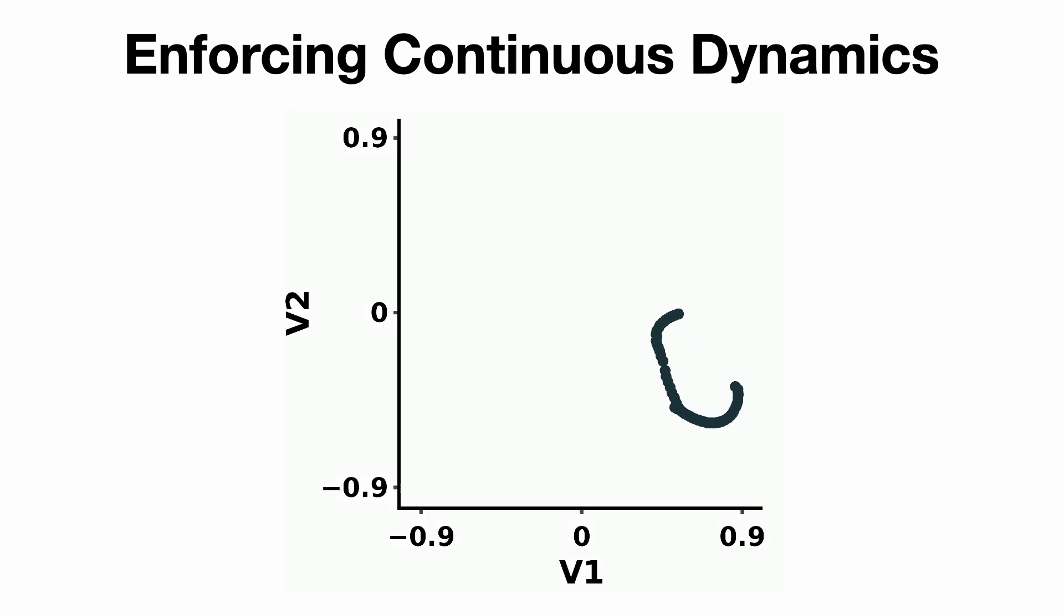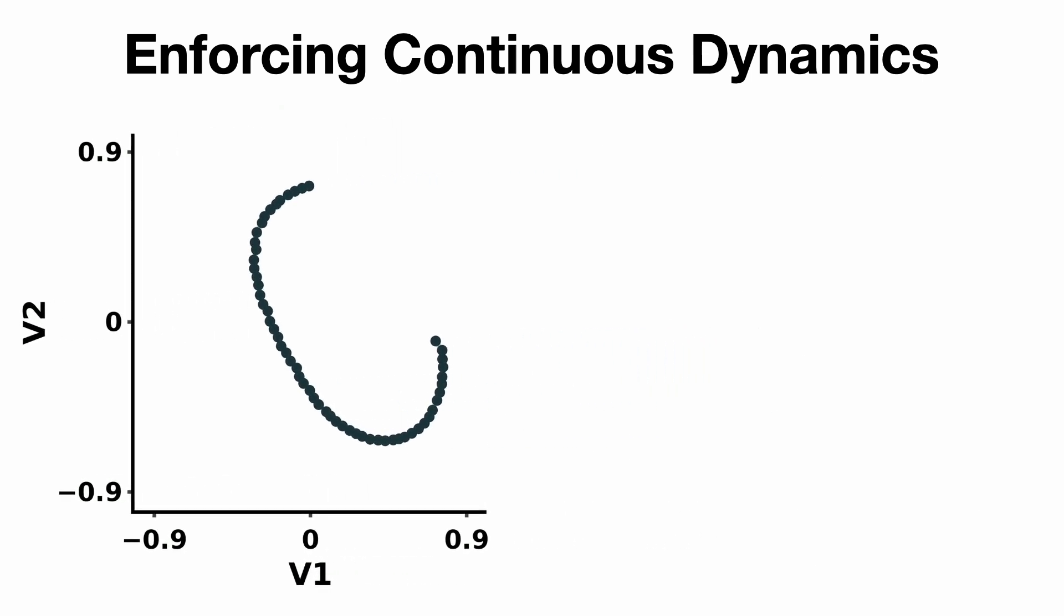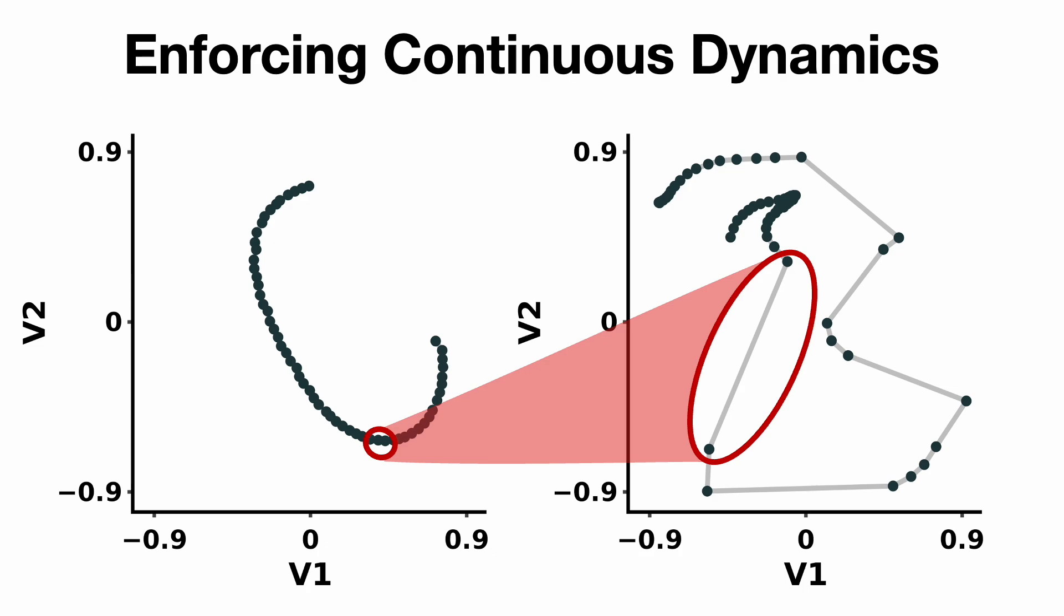To prevent this, we then introduce the space-filling constraint to encourage the coverage of the entire state space. This process results in smooth neural state variables that produce smooth trajectories while preserving the prediction accuracy of future system dynamics.